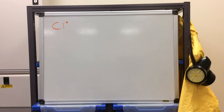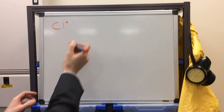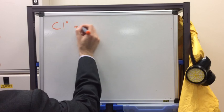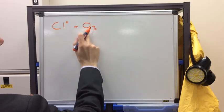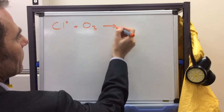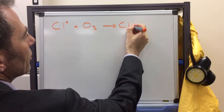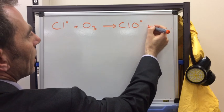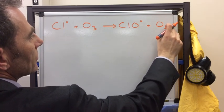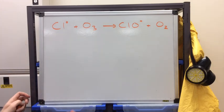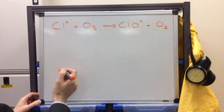Now this chlorine radical exists in the stratosphere, it will go on and react with ozone. Basically, the chlorine radical will take out an oxygen atom from the ozone and form a new radical, the ClO radical. And it will also form a molecule of O2. This is what we call a propagation step.